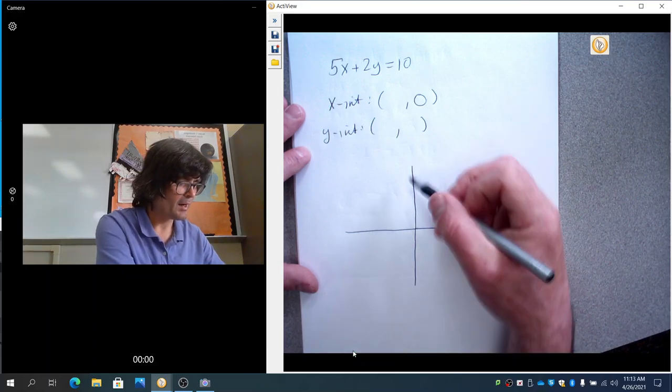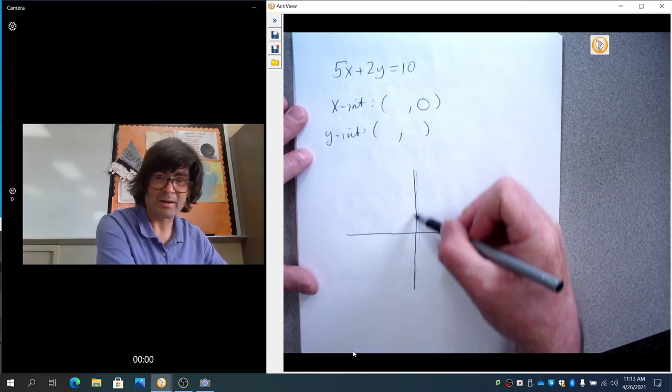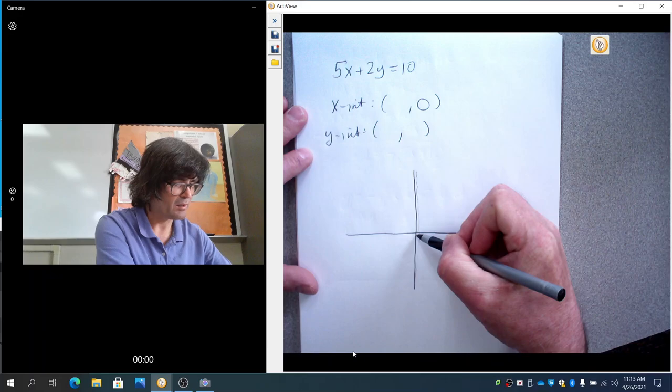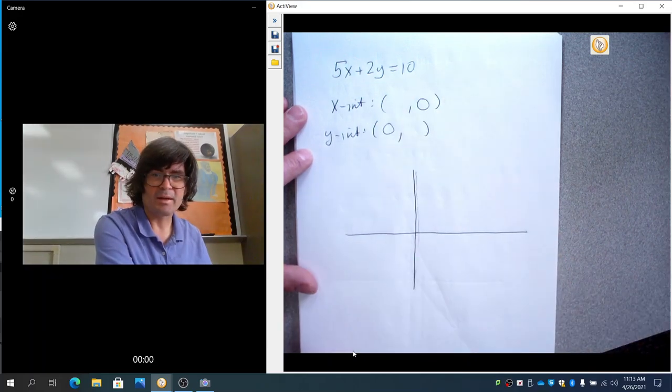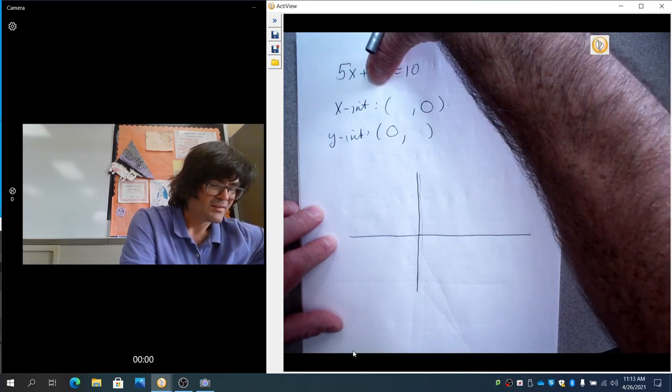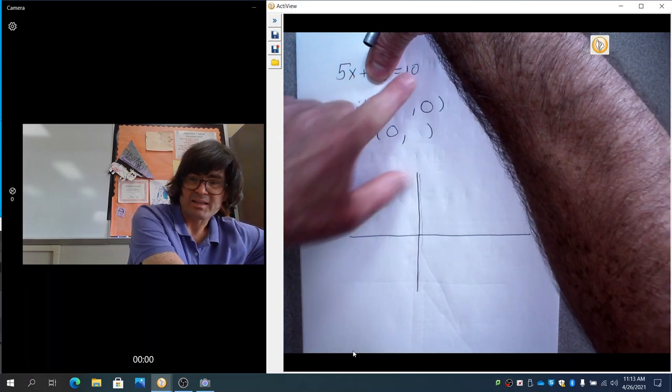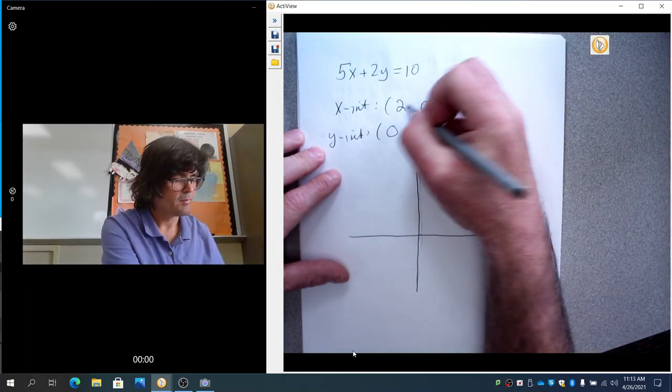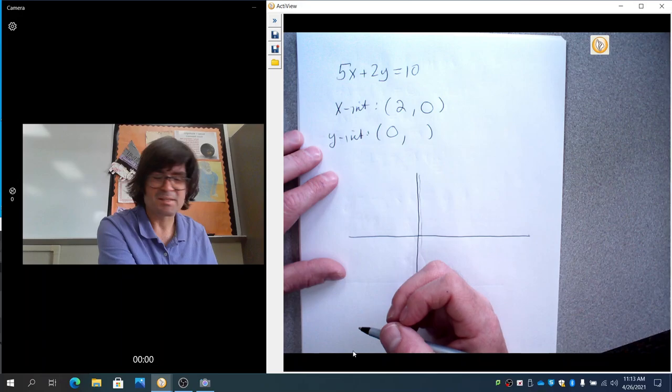And then if I'm on the y-axis looking for a place where we cross the y-axis, a y-intercept, then the x is always 0. So, if you know that, if you took 0 and you stuck it in right here and asked what would x have to be, 5 times what makes 10, that would be 2. That's my x-intercept is 2, 0.